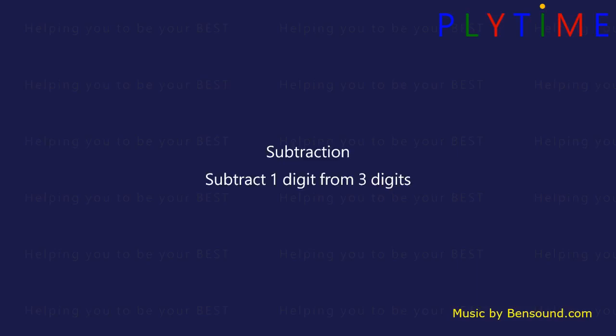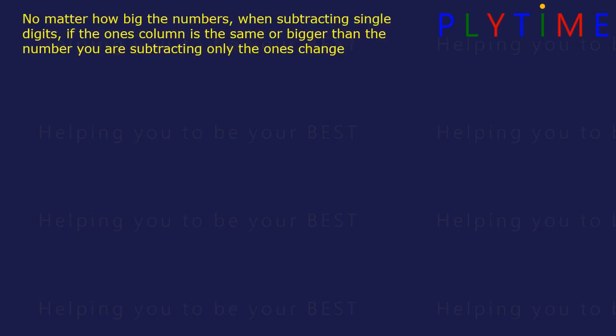Subtraction. Subtract one digit from three digits. No matter how big the numbers, when subtracting single digits, if the ones column is the same or bigger than the number you're subtracting, only the ones change.